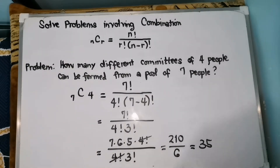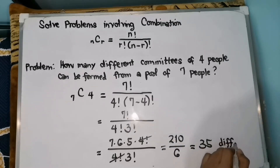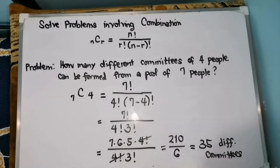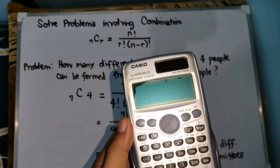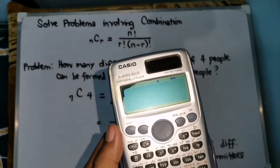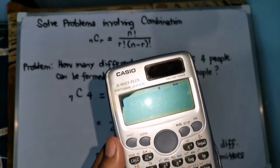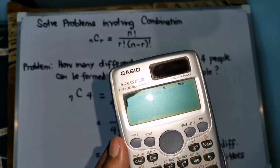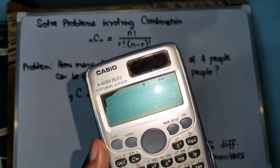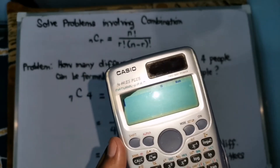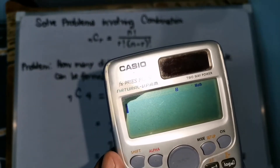Therefore, there are 35 different committees. Let's check our answer using our scientific calculator. I would like to remind students that it is much better to use our formula for solving — manual computation. Just use the calculator to check whether your answer is correct or not. Don't rely solely on the calculator.